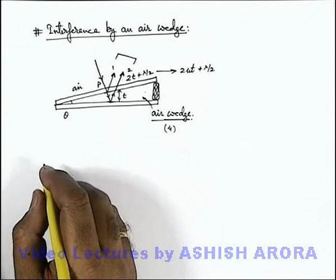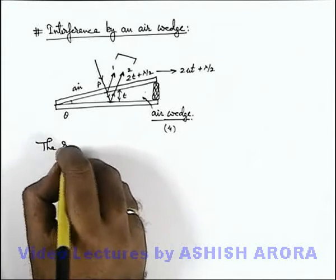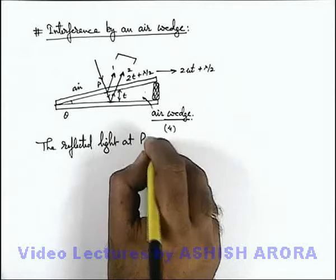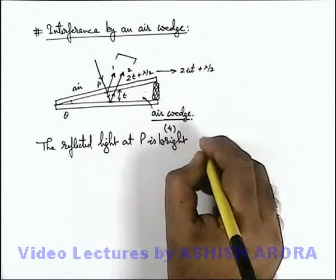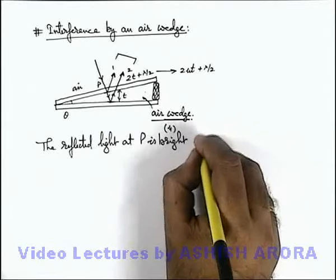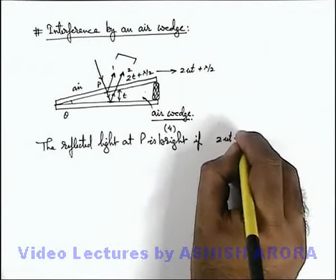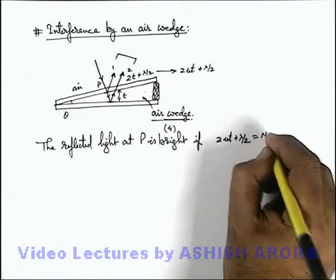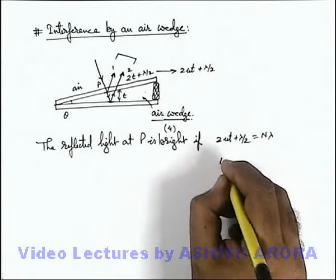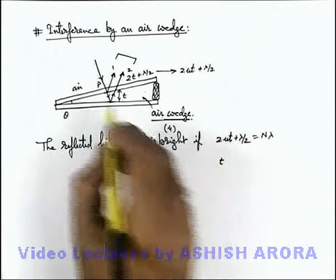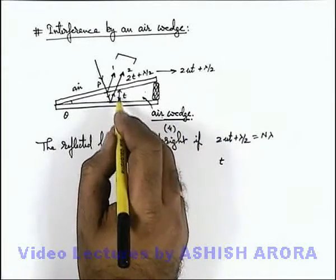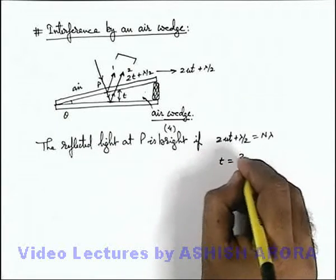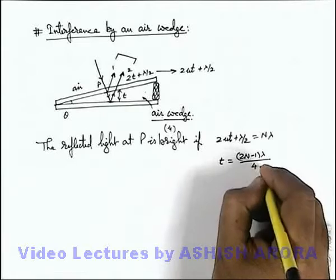Now, the reflected light at P is bright, or there is a bright fringe at point P if the path difference, which is 2 mu t plus lambda by 2—in case of air wedge we can take it as 2t plus lambda by 2—must be equal to n lambda. In this situation, we are getting the value of t, the thickness of the air wedge or the material wedge or the medium wedge which is filled between the two glass plates, can be written as (2n - 1) lambda by 4 mu.